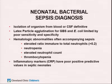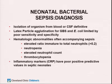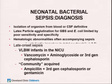Diagnosis of neonatal sepsis requires isolating the organism from blood or spinal fluid for a definitive diagnosis. Latex particle agglutination has high false-positive rates and should not be relied upon. Hematological abnormalities are often present but none are sensitive or specific enough to rule in or rule out sepsis. The best marker is an elevated ratio of immature to total neutrophils — the IT ratio greater than 0.2 signifies higher likelihood of sepsis. CRP and procalcitonin generally have poor positive predictive values.